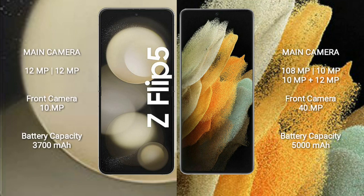Samsung Galaxy Z Flip 5 has a dual rear camera setup: 12MP plus 12MP, and a 10MP front camera. Samsung Galaxy S21 Ultra has a quad rear camera setup: 108MP plus 10MP plus 10MP plus 12MP, and a 40MP front camera.